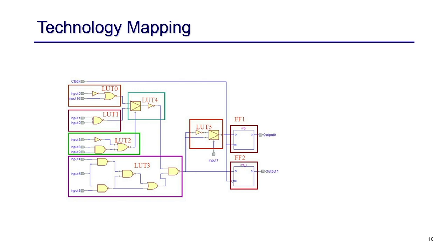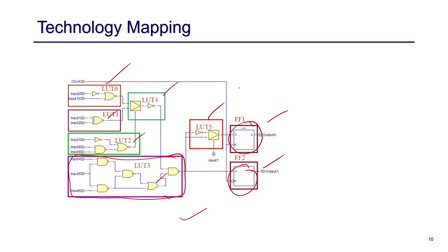The last step is technology mapping. For FPGA, whenever registers are found they are mapped to flip-flops, and subsets of the circuit are mapped to LUTs — for example, using LUT1 through LUT6 to cover all the gates in the design. This way you cover your gates with LUTs and map everything to the components already available in the FPGA. Once your RTL is mapped to gate level, you have a technology-mapped gate-level design.